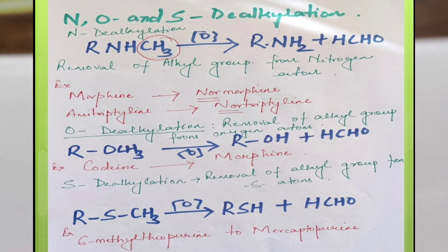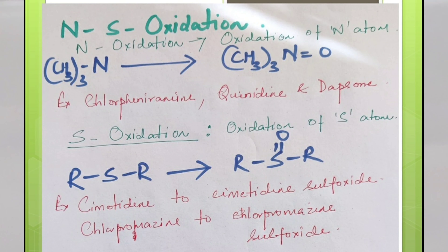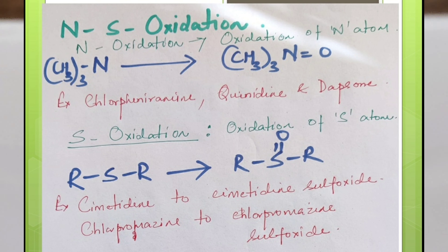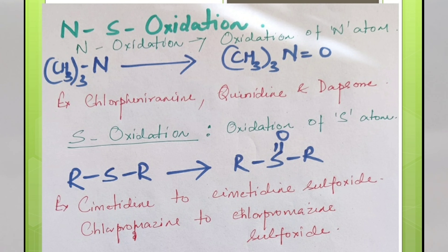Next is NS oxidation where oxidation occurs at nitrogen atom or sulfur atom. Oxidation of nitrogen atom is known as N-oxidation. Examples of drugs which undergo N-oxidation are chlorpheniramine, quinidine and dapsone. S-oxidation involves oxidation of sulfur atom. Examples of drugs which undergo S-oxidation are cimetidine, which gets converted to cimetidine sulfoxide, and chlorpromazine, which gets converted to chlorpromazine sulfoxide.